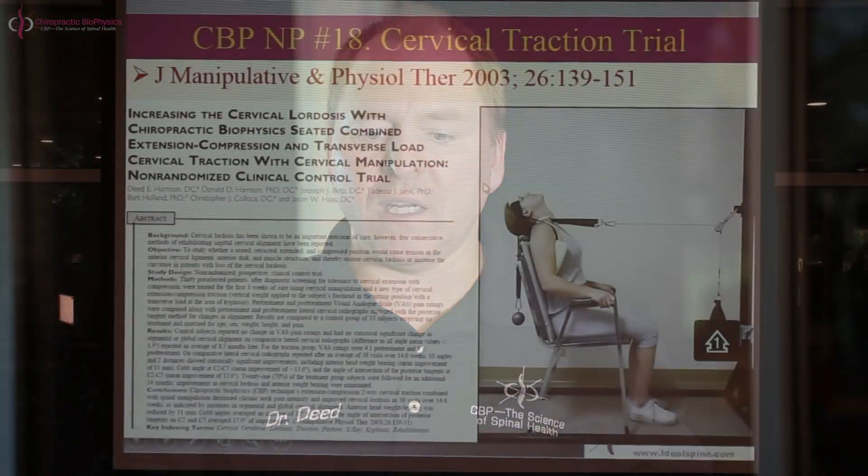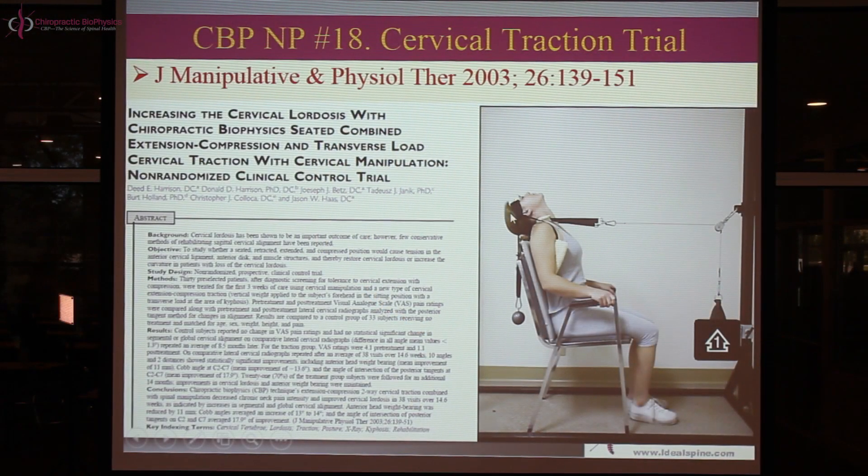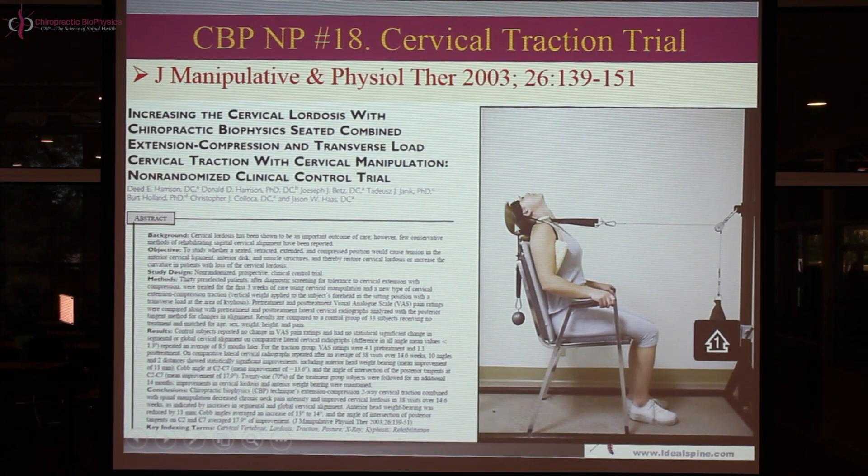The title of the project was 'Increasing the Cervical Lordosis with Chiropractic Biophysics Seated Combined Extension Compression and Transverse Load Cervical Traction with Spinal Manipulation: A Non-Randomized Clinical Control Trial.' This traction is different from last week's. Last week the back pole was slightly elevated upwards; this time we have a pull on the forehead going straight down, adding compression load to the cervical spine. The goal is to see if this can restore the cervical curve and assist with chronic neck pain.